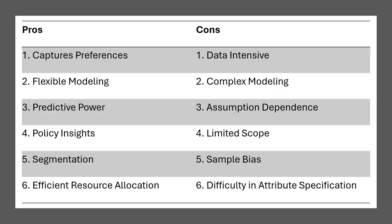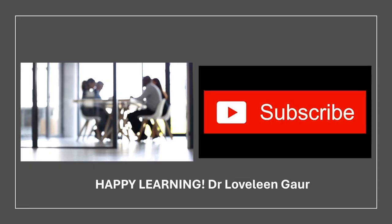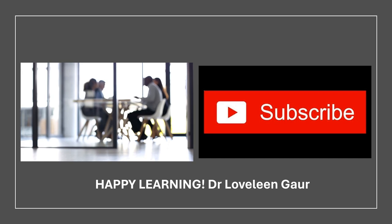These models also have pros and cons. Benefits include: capturing preferences well, flexible modeling, good predictive power, policy insights, strong segmentation capability, and efficient resource allocation. Limitations include: being data intensive, complex modeling, reliance on assumptions, limited scope, potential sample bias, and difficulty in attribute specification. Discrete choice models are widely used for analysis of individual choice behavior across many fields such as economics, engineering, environmental management, urban planning, and transportation. In this video, we have focused only on marketing applications.